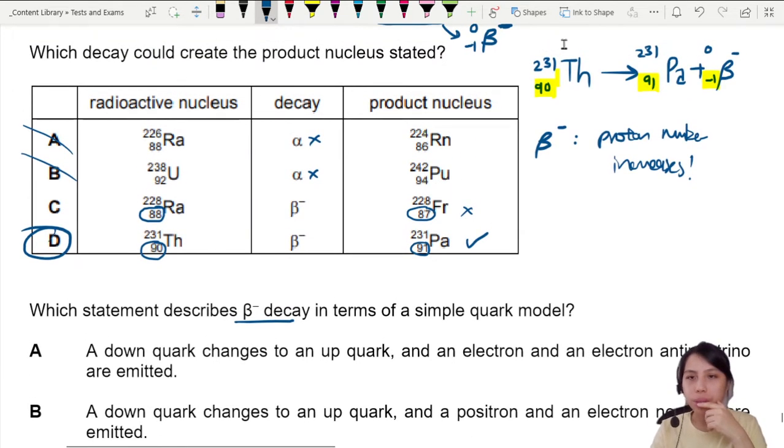Here's an example of a decay we looked at. Thorium, 90 becomes 91. But look, the nuclear number never changed.